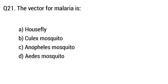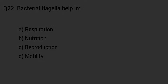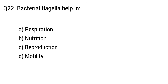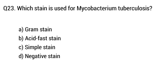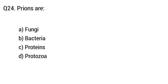Question 21: The vector for malaria is? The right answer is option C, Anopheles mosquito. Question 22: Bacterial flagella help in? The right answer is option D, motility. Question 23: Which stain is used for Mycobacterium tuberculosis? The right answer is option B, acid-fast stain.